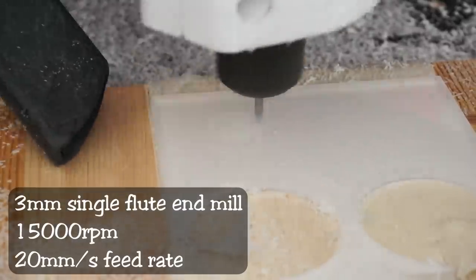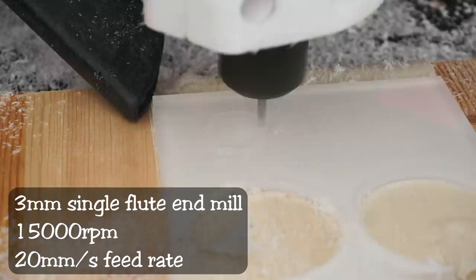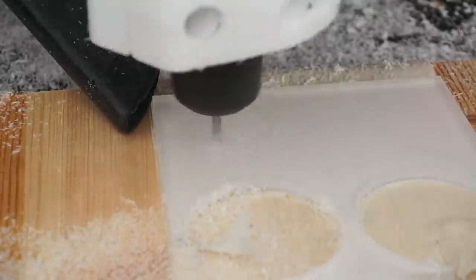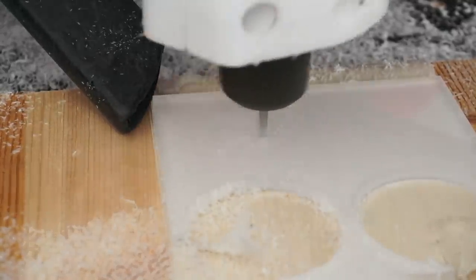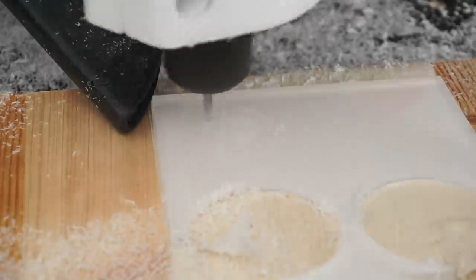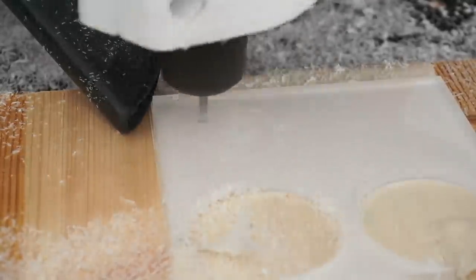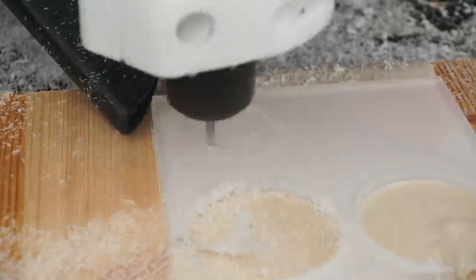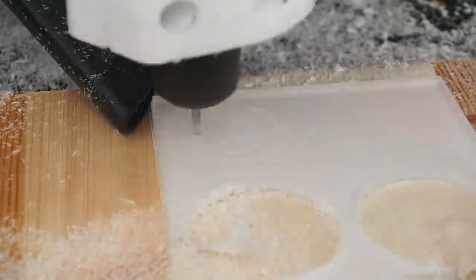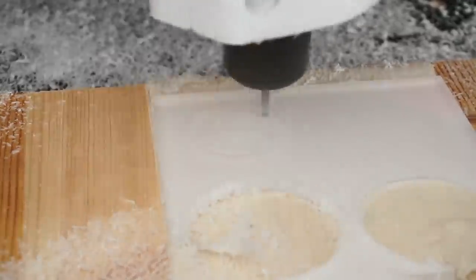After cutting several more lenses, this right here came out to be my preferred way to make those. It is basically just a spiral toolpath with a very small stepover of 0.05mm and a 2D contour to cut out the lens from the stock material. The small ridges can be sanded easily and you don't have to do a tool change.